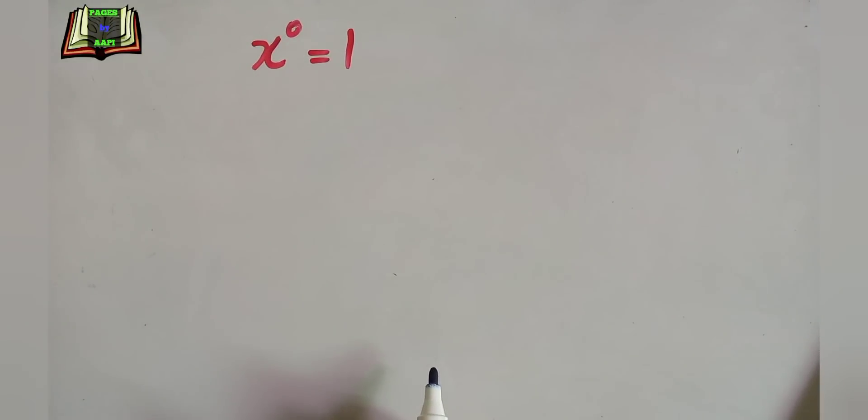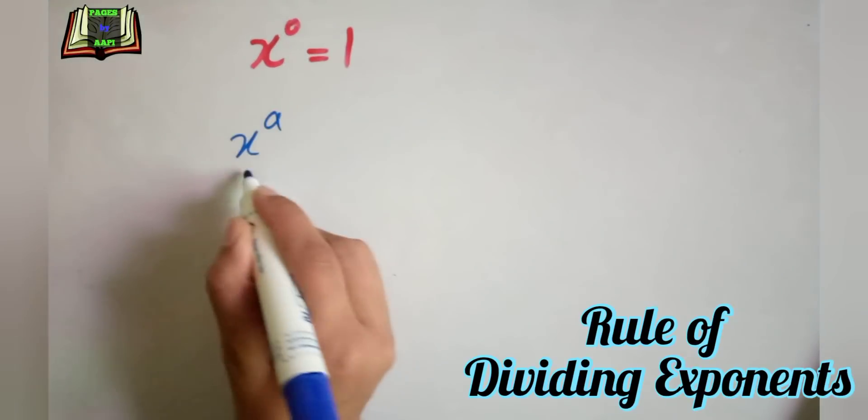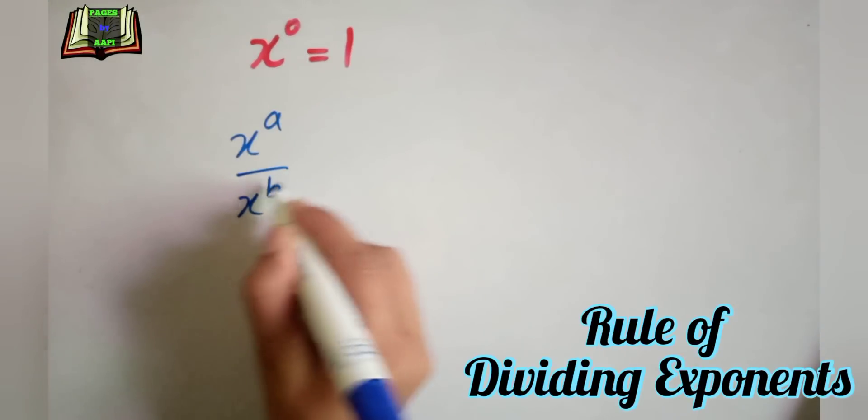x ki power a divided by x ki power b, that is equal to x ki power a minus b. This is the rule of dividing exponents.